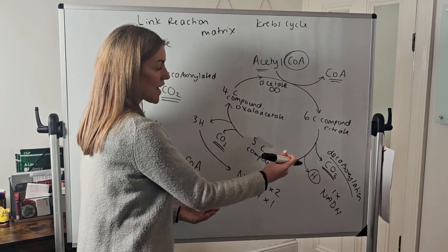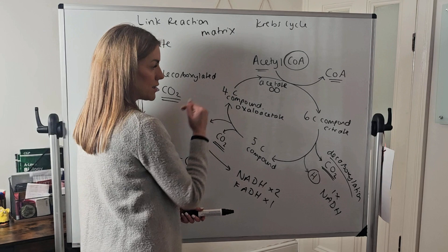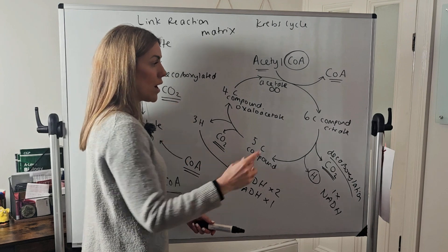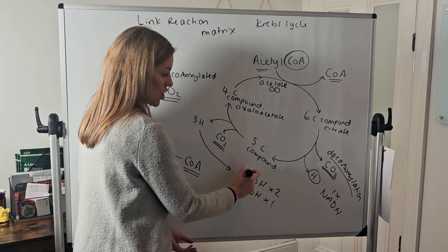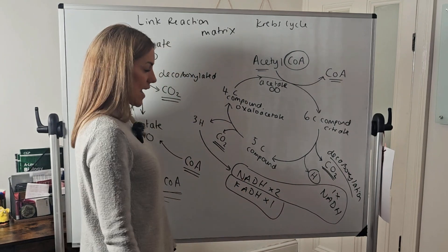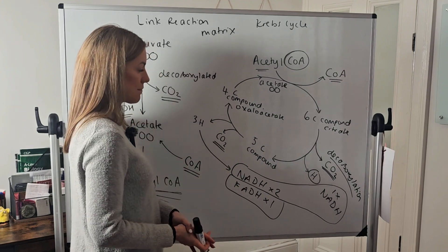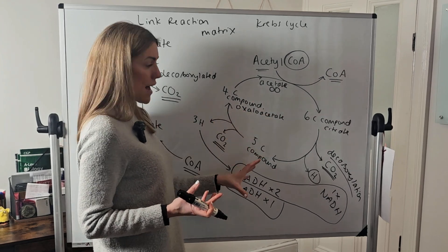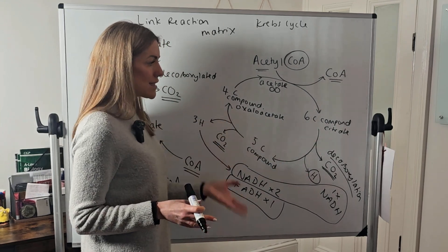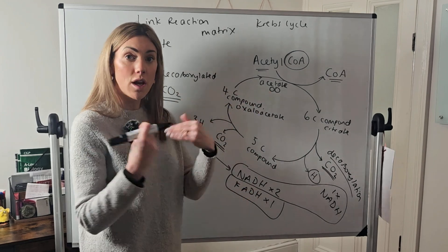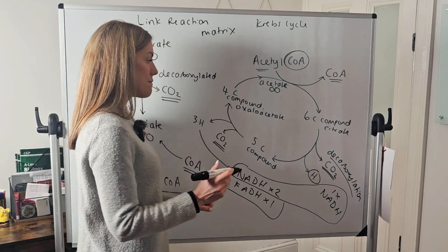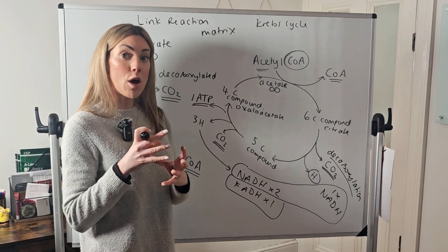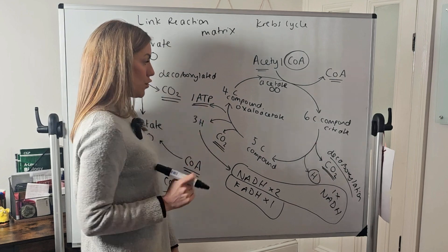You can simplify it even further: for AQA you can just say the six-carbon compound is decarboxylated, producing two CO2, and oxidized, producing three NADH and one FADH — also called reduced NAD and reduced FAD. Something I haven't mentioned yet: you also make one molecule of ATP by substrate level phosphorylation, where a donor molecule donates a phosphate to ADP to form one ATP.